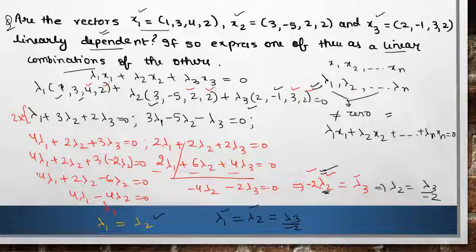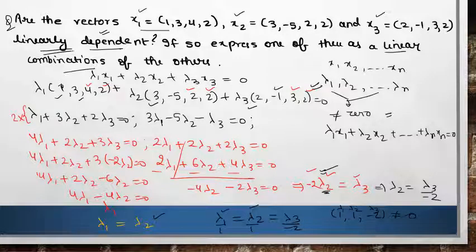So these values can be 1, 1, minus 2 for lambda 1, lambda 2, and lambda 3. That means these are non-zero values. So yes, these vectors are linearly dependent.